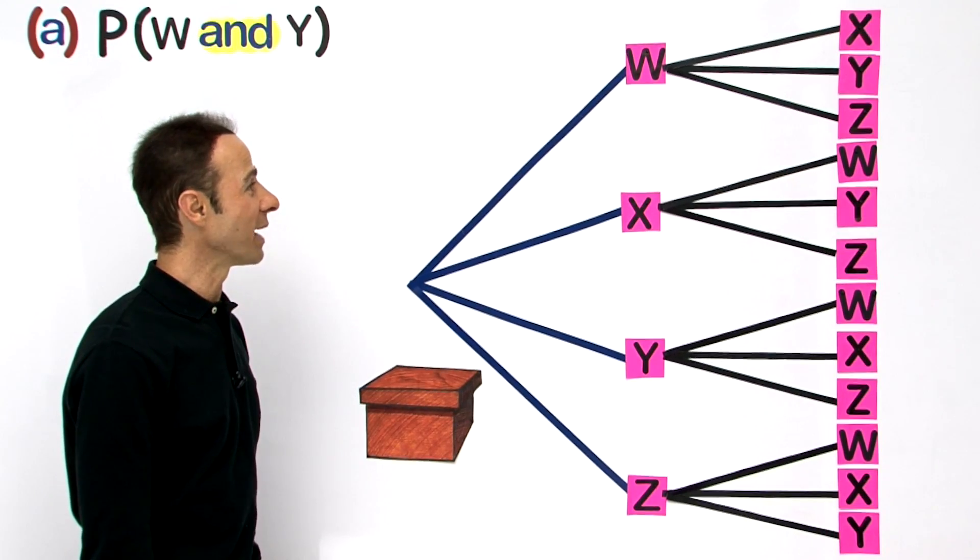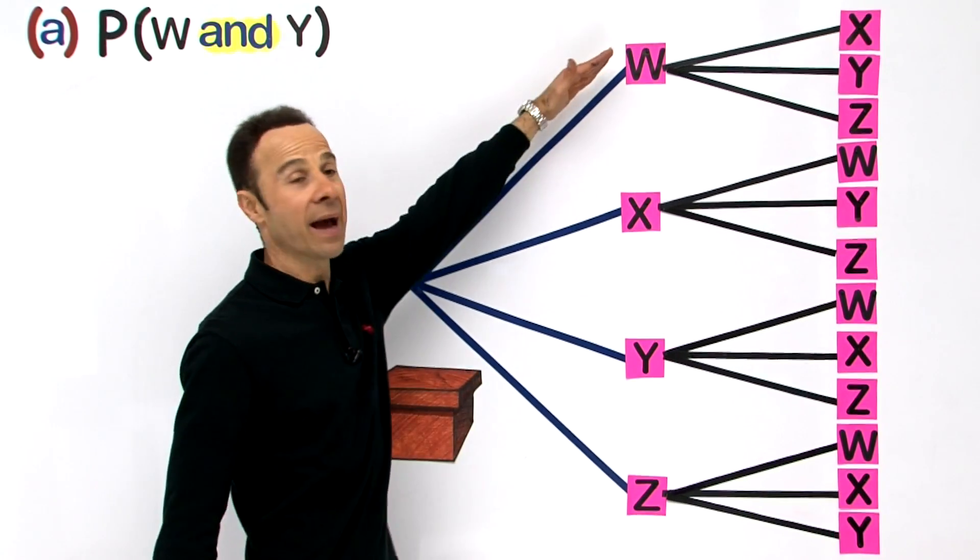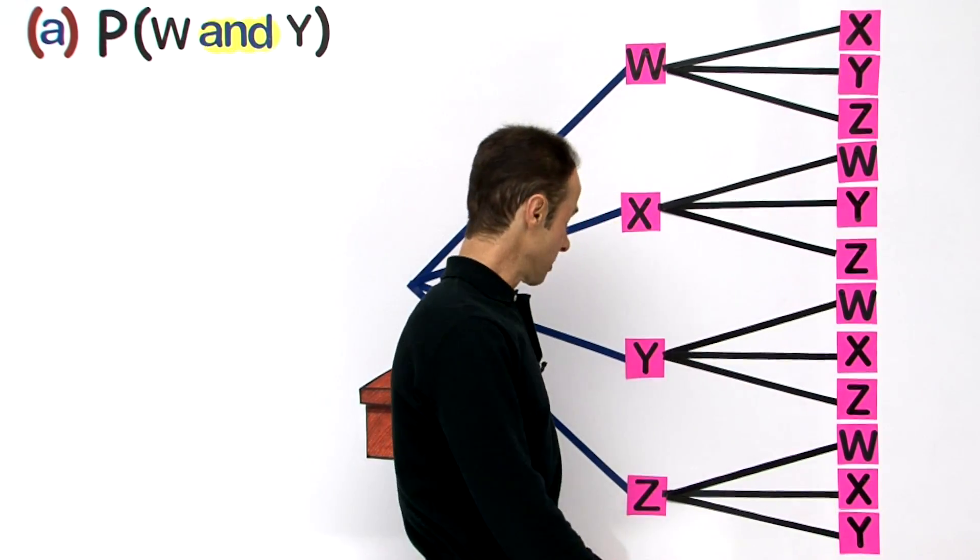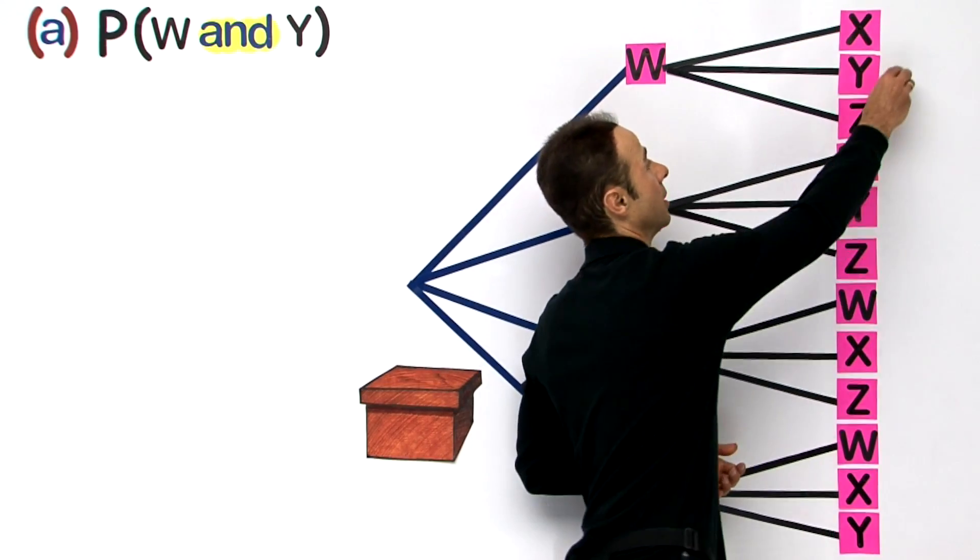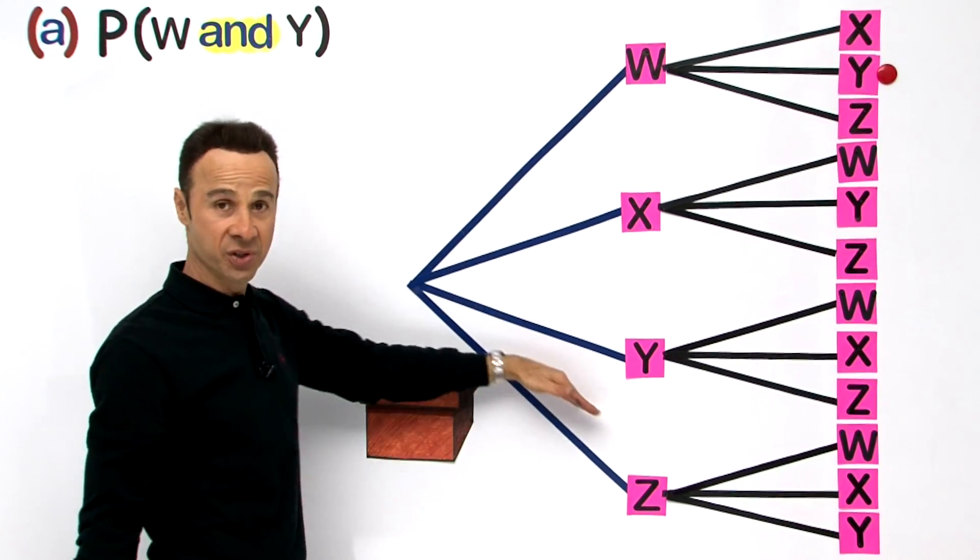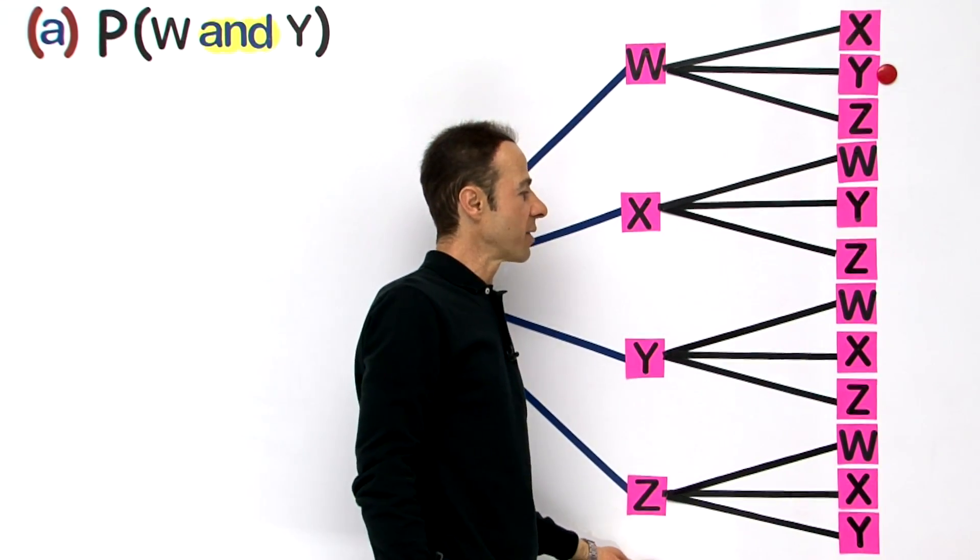So let us look for a W and a Y. A W and a Y would be first a W out of the box and then a Y out of the box. So let us mark that out. Or we could have perhaps a Y first at this time and then a W, so let me identify and mark that out.